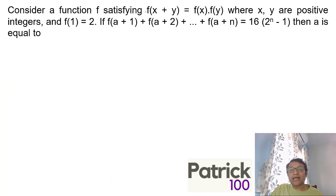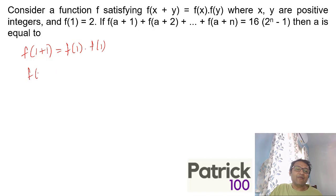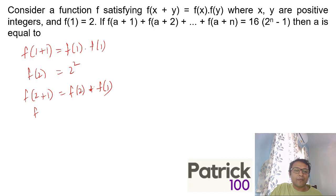Consider a function f satisfying f(x + y) = f(x) × f(y) where x, y are positive integers, and f(1) = 2. If f(1) = 2, I can make out a pattern: f(1 + 1) = f(1) × f(1). So automatically f(2) = 2². Same method: f(2 + 1) = f(2) × f(1). So f(3) = 2² × 2 = 2³. I can make out a pattern: f(4) should be 2^4 and so on.